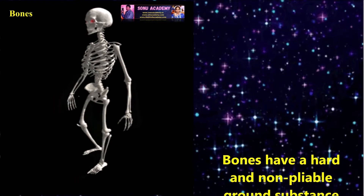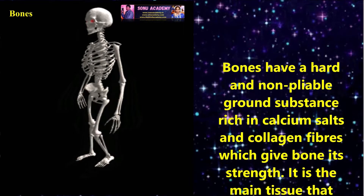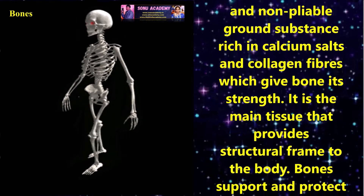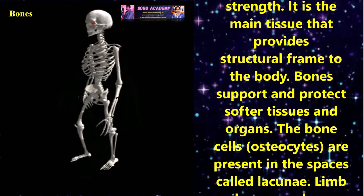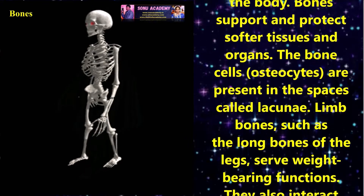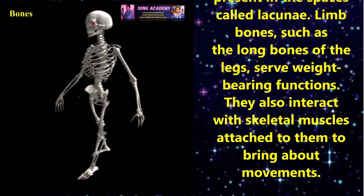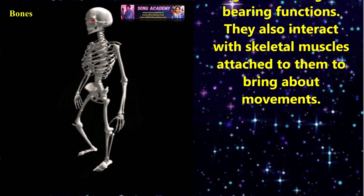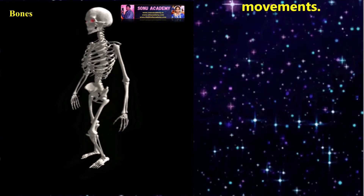Bones have a hard and non-pliable ground substance rich in calcium salts and collagen fibers, which give bone its strength. It is the main tissue that provides the structural framework to the body. Bones support and protect softer tissues and organs. The bone cells are present in spaces called lacunae. Limb bones such as the long bones of the legs serve weight-bearing functions and also interact with skeletal muscles attached to them to bring about movements.